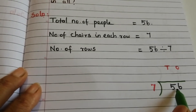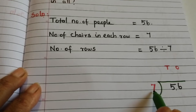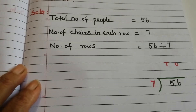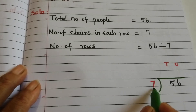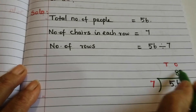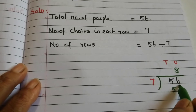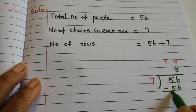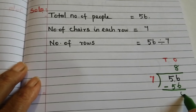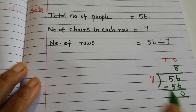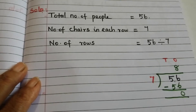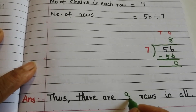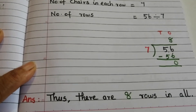Since 5 is less than 7, we take 56. Using the 7 times table: 8 × 7 = 56, remainder 0. So the answer is 8. Thus there are 8 rows in all.